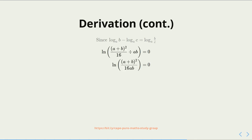So using that result, we get that the natural log of (a plus b) all squared on 16 divided by ab is equal to 0. We can simplify that to get that the natural log of (a plus b) all squared on 16ab is equal to 0.